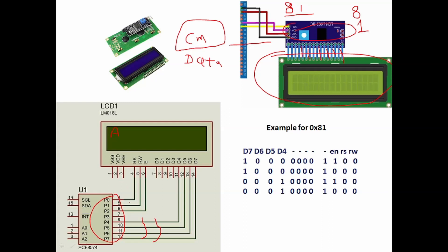Now for the control pins: we have three — RS, RW, and Enable. RW is used for reading or writing; since we are only writing to the LCD, RW will remain 0 always. RS decides whether the data (8 or 1) is a data byte or a command byte. In configure mode we write commands, so RS will be 0. For actual data RS will be high. Enable acts like a pulse — after writing each nibble value you have to generate a pulse.